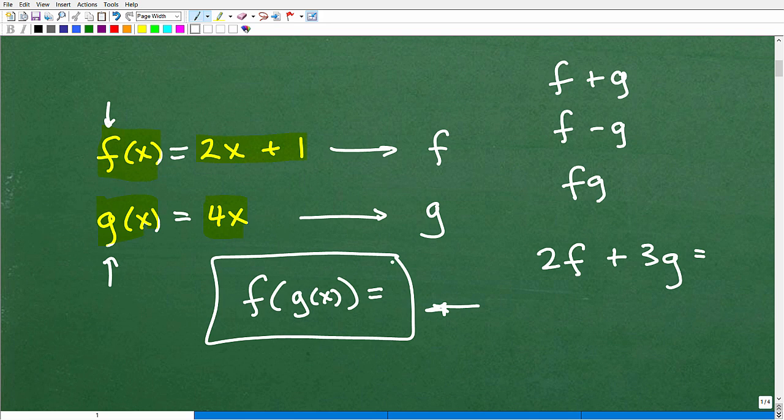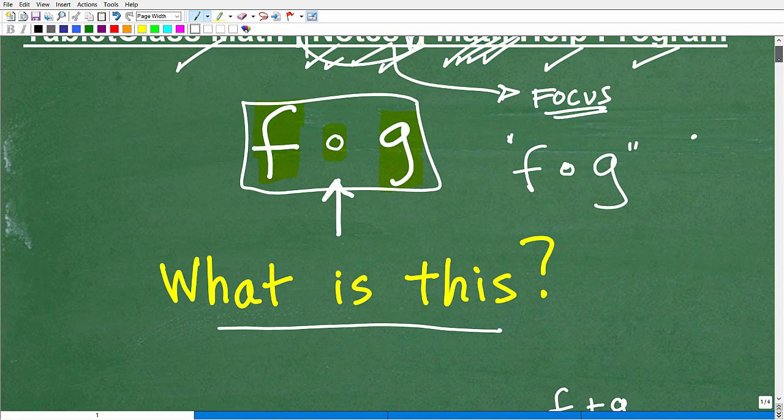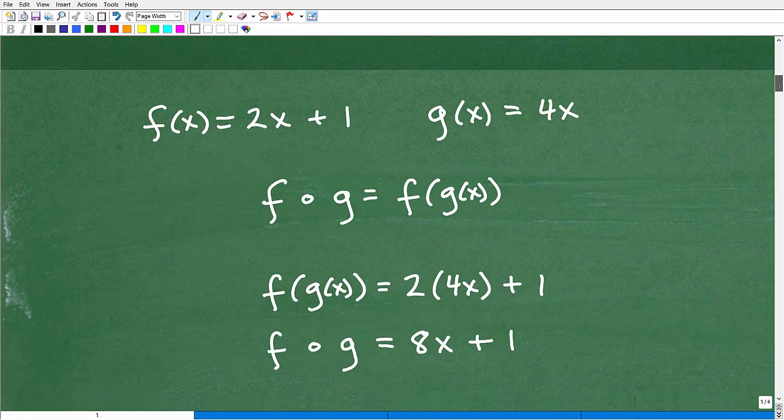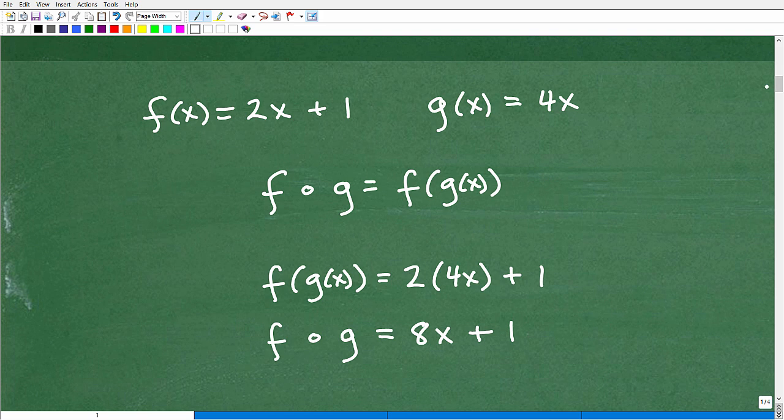And so now, knowing what this is, we can answer the question right up here. What is this? Well, it has to do with composite functions. All right? So let's go down here. Let's suppose here's our two functions. We have f of x is equal to 2x plus 1 and g of x is equal to 4x.